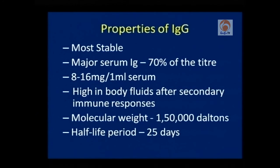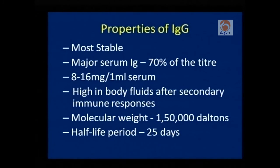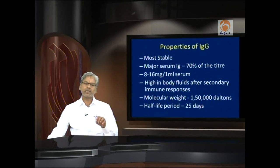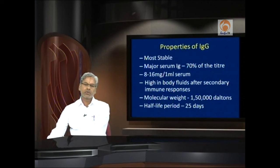Considering the properties of IgG in human beings: this is the most stable immunoglobulin in our system, contributing almost 70 percent of the antibody titer. One ml of serum contains 8 to 16 milligrams of immunoglobulin G. Primary immune response is the first one, which causes immune memory. Secondary immune response is generated upon second infection, at which time IgG concentration in serum increases very much. IgG is of molecular weight 150,000 Daltons and has a half-life of 25 days.